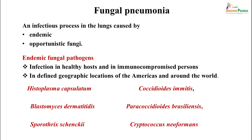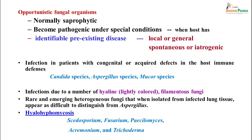Pneumonia in patients could be caused by endemic or opportunistic fungi. Endemic pathogens are seen in healthy or immunocompromised individuals in defined geographic locations, such as Histoplasma capsulatum, Blastomyces, and Cryptococcus in the Americas. Opportunistic infections are caused by normally saprophytic fungi in the environment that cause infection only when a patient is immunocompromised due to disease or drugs — including Candida, Aspergillus, Mucor, and other hyaline filamentous fungi like Scedosporium and Paecilomyces.